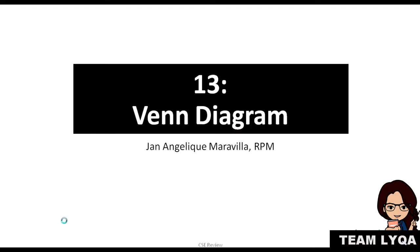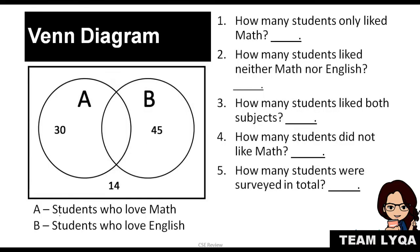So we're going to talk about Venn Diagrams. The structure of a Venn Diagram looks like this — it has circles, and the label of each circle tells you what's inside it. For this example, circle A contains students who love math, and circle B contains students who love English.